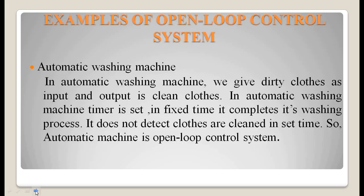Examples of open loop control systems: an automatic washing machine is an example. We give dirty clothes as input and the output is clean clothes. The timer is set for a fixed time and it completes its washing process. It does not detect whether clothes are clean in the set time or not — it does not give feedback on whether the desired output is achieved.